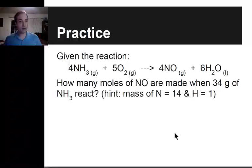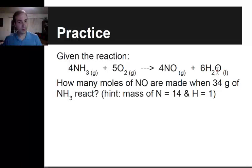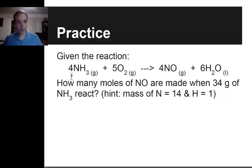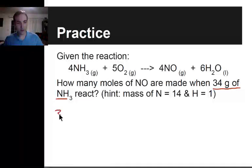We've got two practice problems. I'll do the first one with you, and then for the second one I'd like you to pause and try on your own. Here's the balanced equation. The question is: how many moles of NO are made when 34 grams of NH₃ react? We use dimensional analysis, so I write down the given value: 34 grams of NH₃.